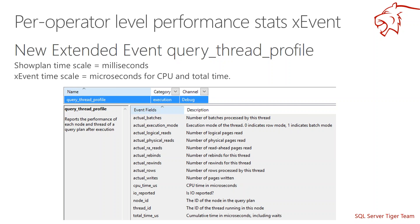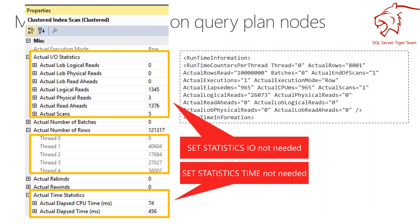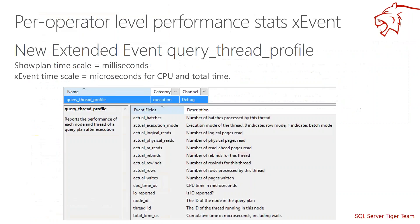Thread zero shows zero records because it's the control thread. If you look at sys.dm_exec_requests, you'll see a similar behavior where for a parallel query, you won't see IO or rows being incremented there — you'll need to look in sys.dm_exec_tasks to see what the tasks are doing.